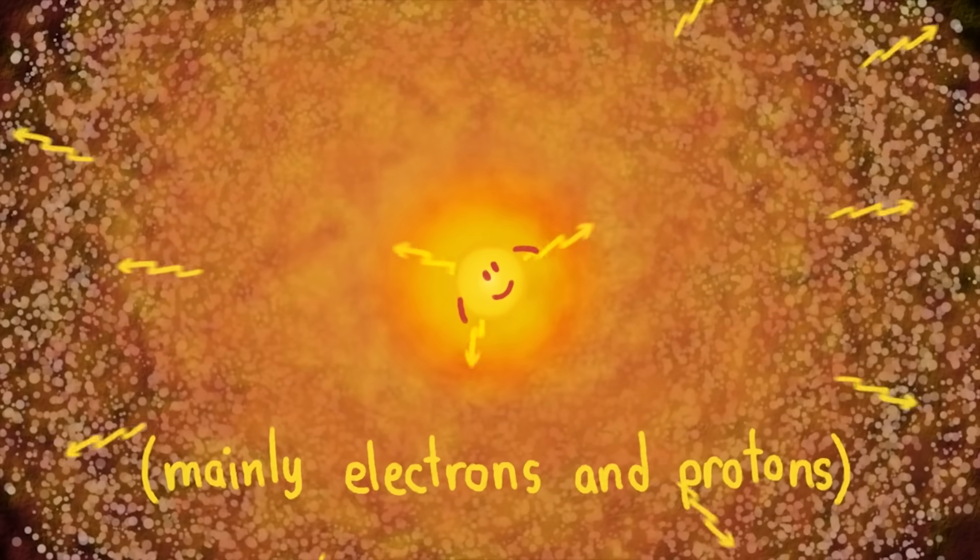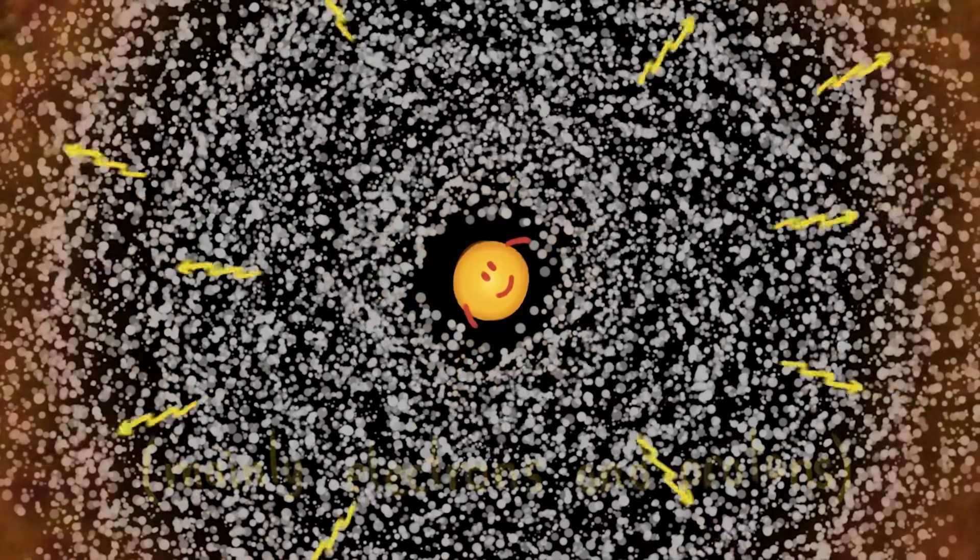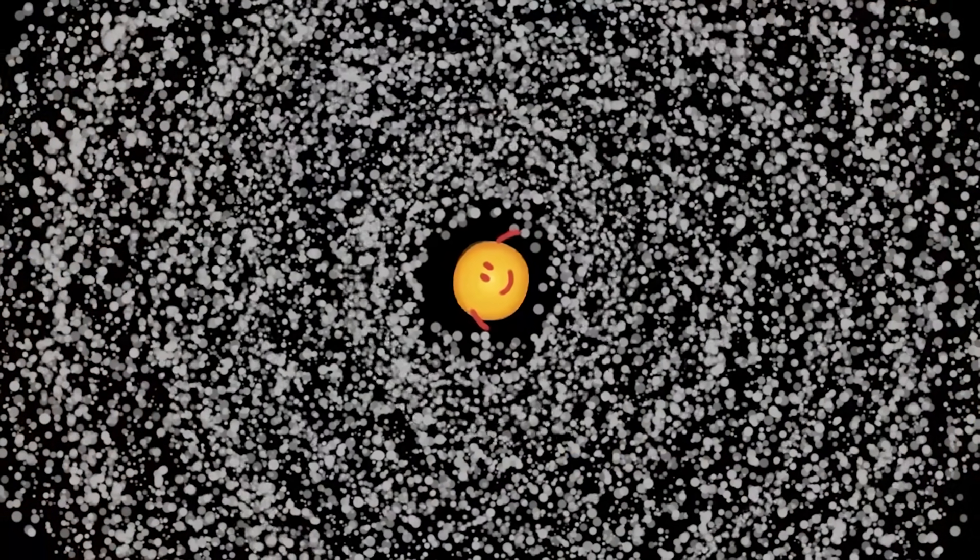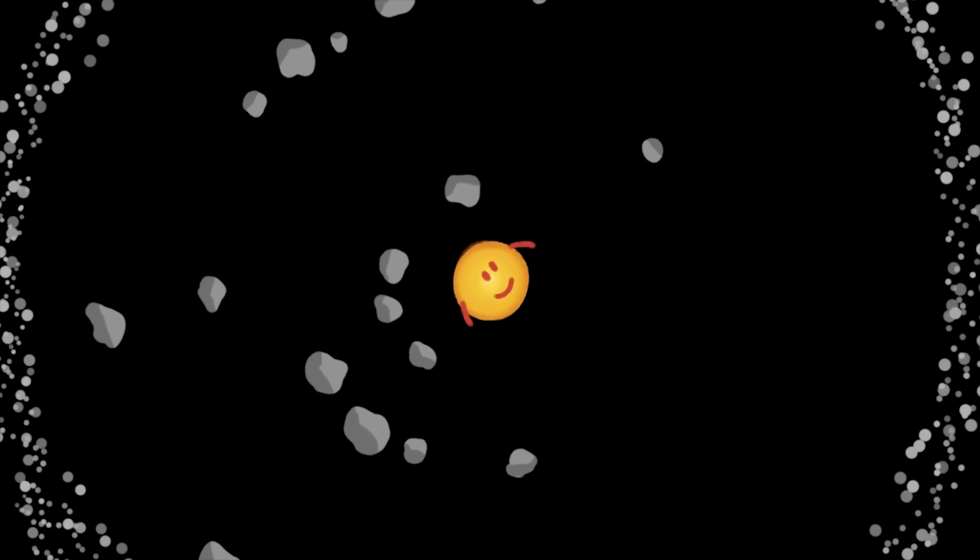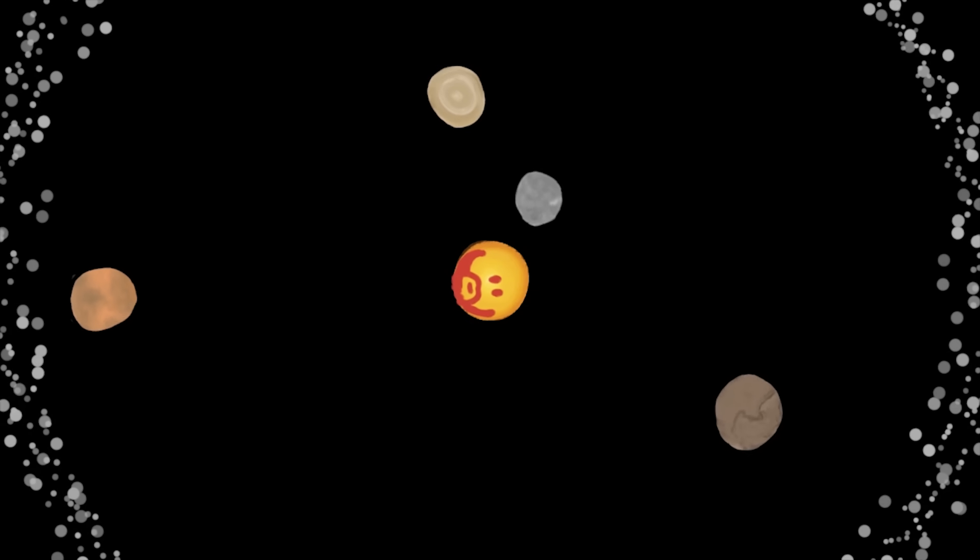Over time, this stream of charged particles pushed the remaining gas cloud farther and farther out, leaving only solid particles behind to clump together into rocks, planetesimals, and finally, the rocky planets of the inner solar system that we know today.